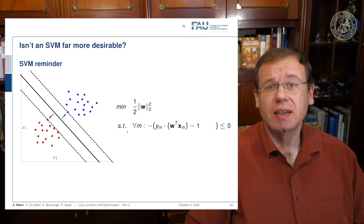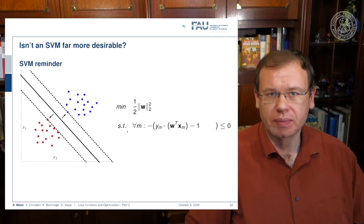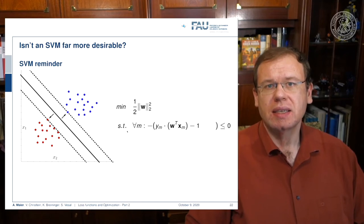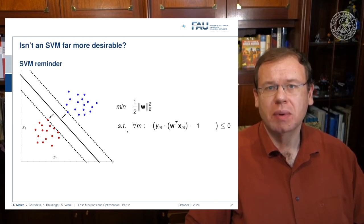To prevent this, you put this in a constrained optimization where you require for all observations m, for all your samples, that they are projected onto the correct side of the decision boundary. This is introduced by this constraint minimization here, so you want to have the signed distance multiplied with the true label minus one to be smaller than zero.